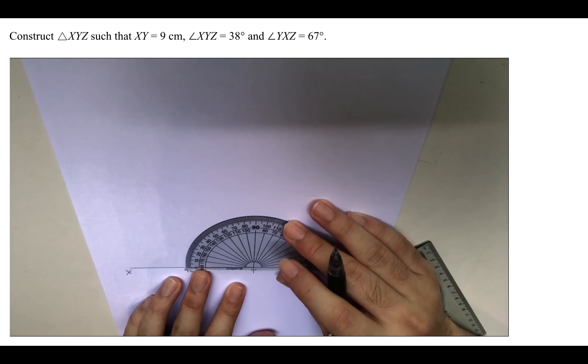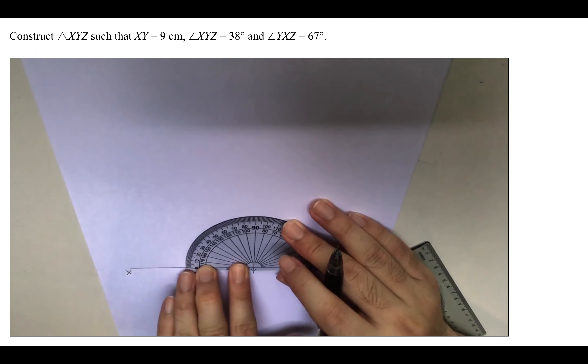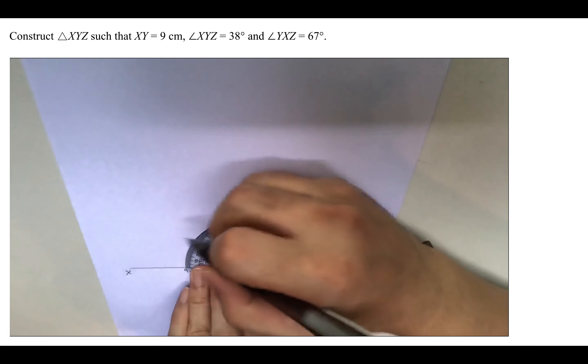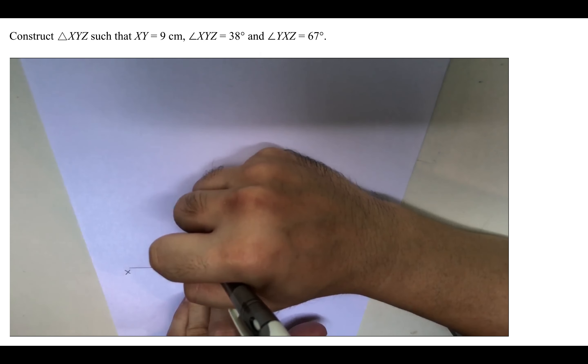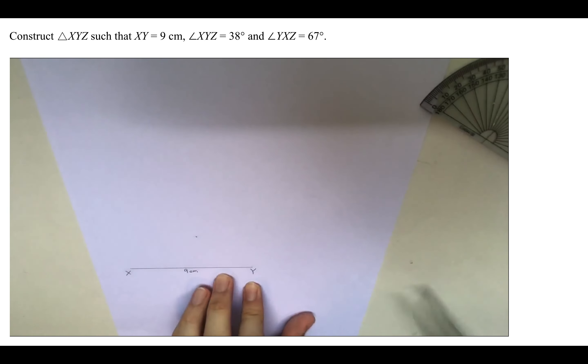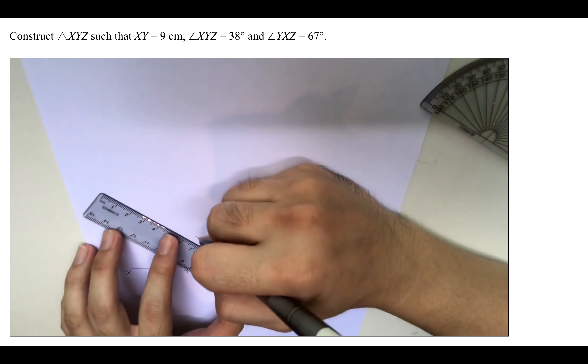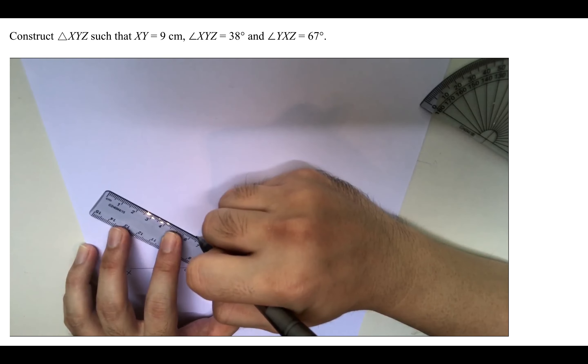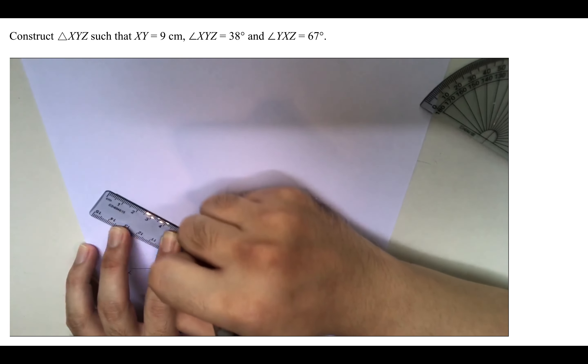So place it as accurately as we can, and we mark out 38 degrees, which will be around here. Once we have that, same thing, use your ruler and straight away draw the line.